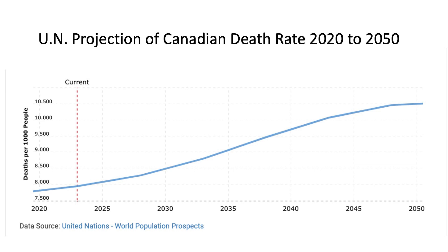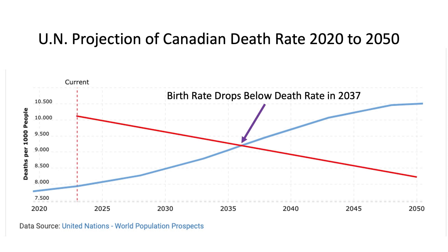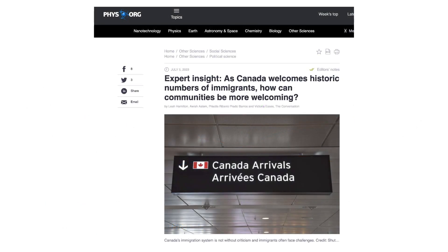In 2018, the United Nations predicted the death rate in Canada for the next several decades. I could not find their methodology to determine how they made these predictions, so let's take a look at how accurate they were between 2020 and 2023 to see if we want to trust their predictions from 2024 through 2050. Just a quick observation: if the birth rate continues dropping at three-quarters of a percent per year, and if the UN death rate projections are correct, then in 2037, just fourteen years from now, more Canadians will die each year than will be born each year.